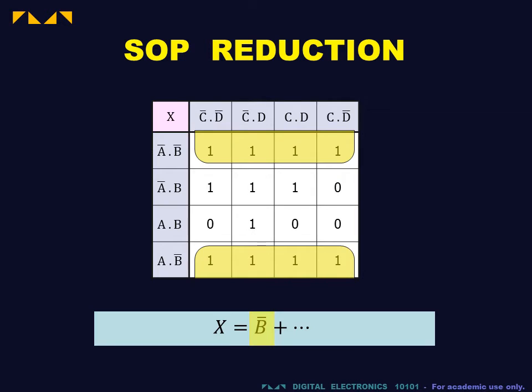For the given map, the largest bag that can be constructed consists of the eight cells connected in a wraparound. This bag corresponds to the B-bar term. The largest bag that covers the remaining ones is the C-bar D term.